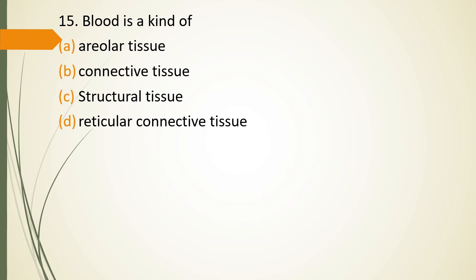Question 15. Blood is a kind of? Areolar tissue, connective tissue, structural tissue, reticular connective tissue. Blood is a kind of? The correct answer is Option B. It is a kind of connective tissue.